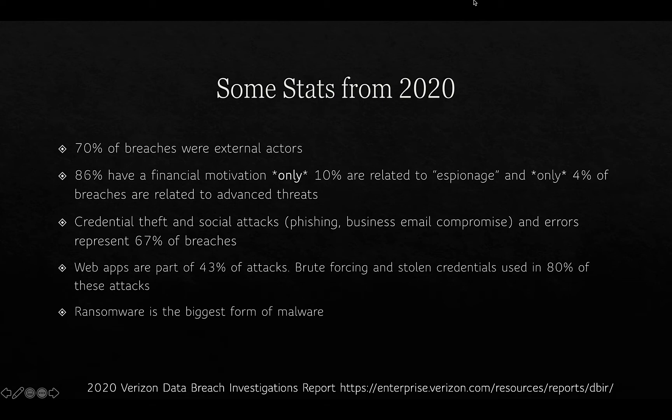In 2020, 70% of breaches were from external actors, according to the Verizon Data Breach Investigations Report. 86% have financial motivation only, 10% are related to espionage or spying, and only 4% of breaches are related to advanced threats — carried out by sophisticated threat actors organized and acting potentially on behalf of their governments. Credential theft, social attacks, phishing, business email compromise, and errors represent 67% of breaches. Web apps are part of 43% of attacks, and brute forcing and stolen credentials are used in 80% of these attacks.